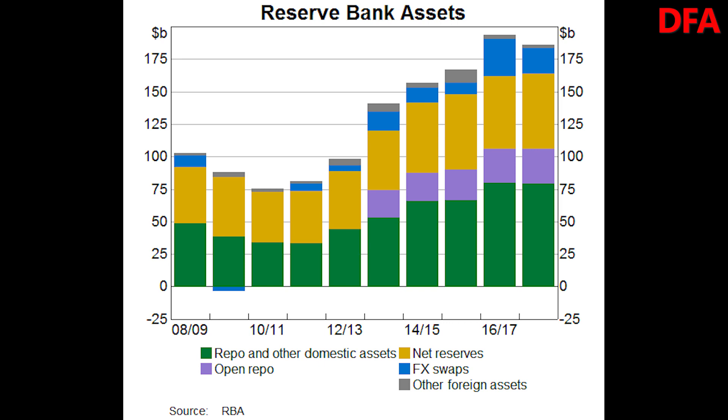The choice between using repo, foreign exchange swaps, or outright purchase to adjust the supply of ES balances is determined by market conditions and pricing. When a large amount of ES balances needs to be supplied or drained, such as when a government bond matures, the RBA might choose to use a combination of instruments. The RBA supplies ES balances not only for monetary policy implementation, but also to facilitate the functioning of the payment system. Over recent years, the RBA has been providing more ES balances to banks to enable the settlement of payments outside normal banking hours, such as through direct entry and the new payments platform.